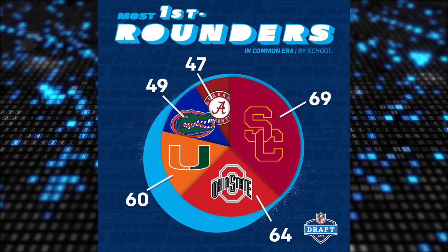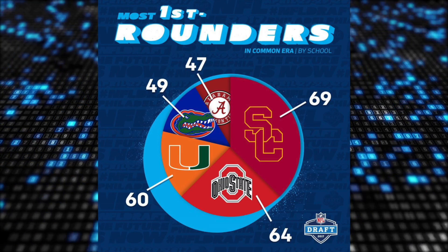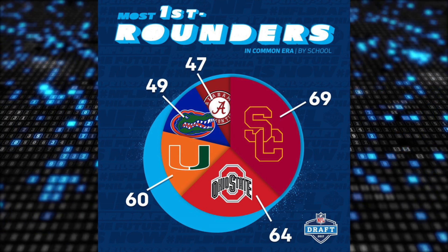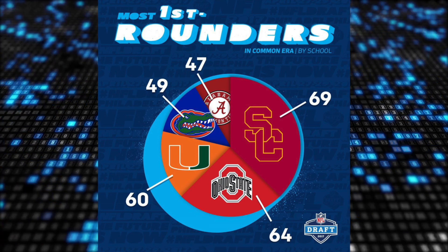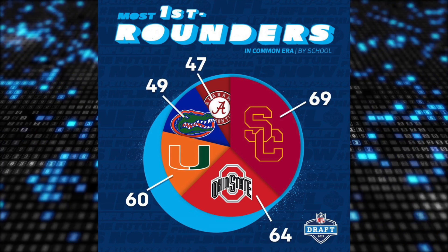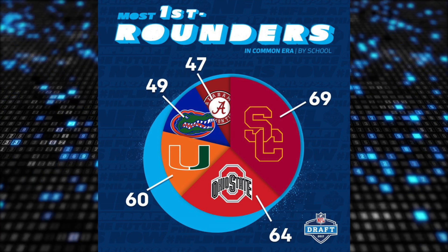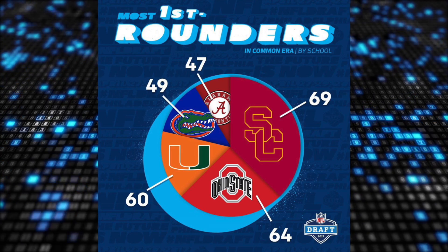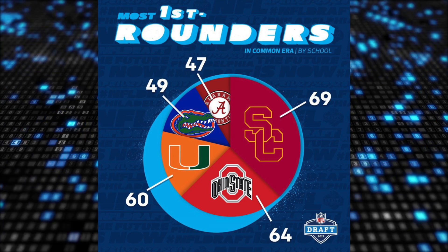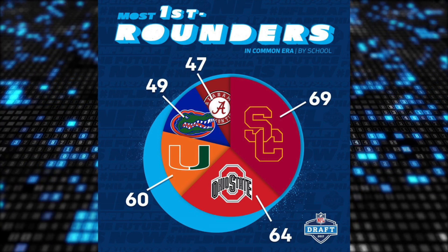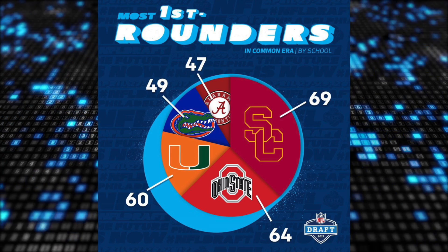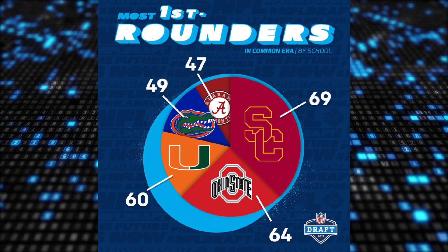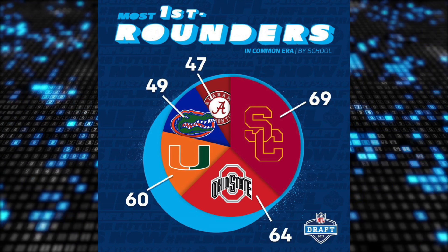This first image I have right here is most first rounders in the common era by school. This is a draft stat — I think this was posted last year by NFL Network or one of the major networks. You see that USC has 69 players in the common era that have gone in the first round of the NFL draft, more than any other team. But USC is double the size of any other school on this list, and this image makes a difference of five players seem like a difference of over 20 or 30 players. So scales of graphs are one way that the media can make a stat look like more than it is or less than it is.